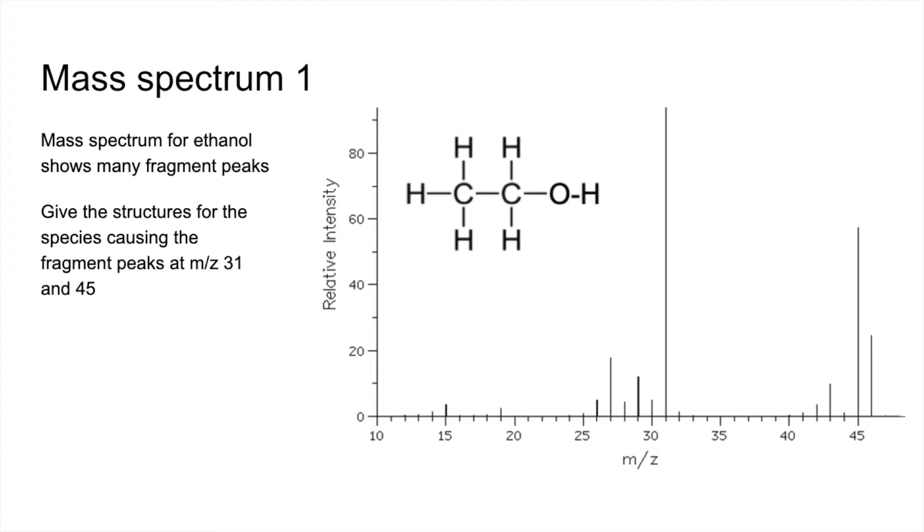First thing I would say, and it's not going to get us any marks, but just the key peak there, that one furthest to the right, get that identified because that's going to tell you the MR of the molecule. That's the molecular ion peak or M plus for short. It's at m/z 46 and of course we know that ethanol has an MR of 46, so that all ties in.